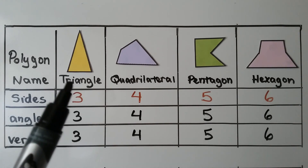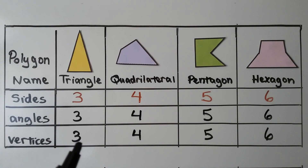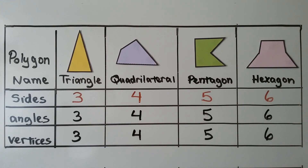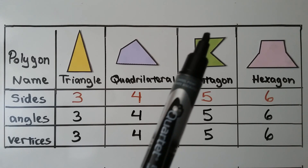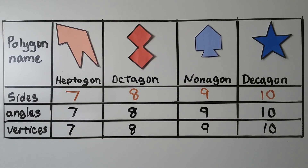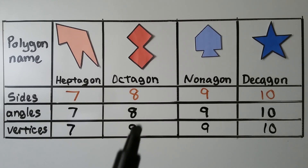A triangle is any polygon that has three sides, angles, or vertices. A quadrilateral doesn't have to look like a square or rectangle — it's any polygon with four sides, angles, and vertices. A pentagon is any polygon with five sides, five angles, and five vertices. Any polygon with six sides, six angles, and six vertices is a hexagon. Any with seven is a heptagon, eight is an octagon, nine is a nonagon, and ten is a decagon.